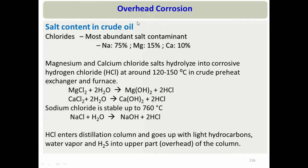We will first discuss overhead corrosion in primary units. As discussed in earlier lectures, corrosive substances in crude oil are sulfur, naphthenic acid, and salts. Sulfur and naphthenic acid were covered previously, so now we focus on salt content. In crude oil, salts are usually found as chlorides: sodium chloride, magnesium chloride, and calcium chloride.